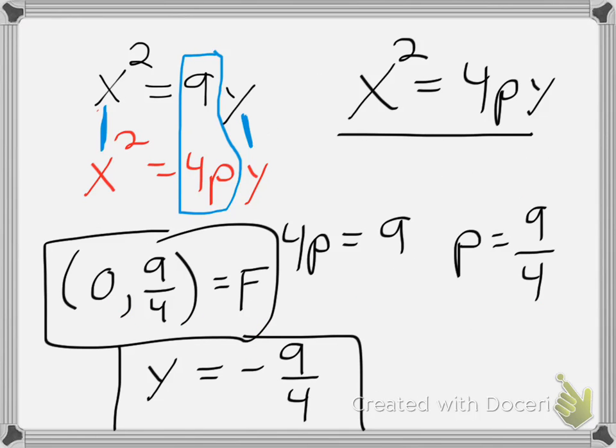Going back to my first one, again, my p value is 9 fourths. To find my focal diameter, I take 4 times the p value, which I can reduce to 4. Or, excuse me, let's try that again.